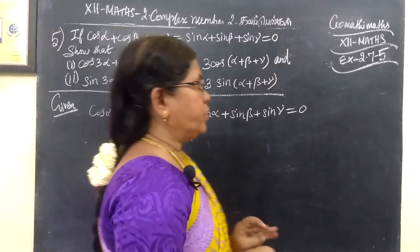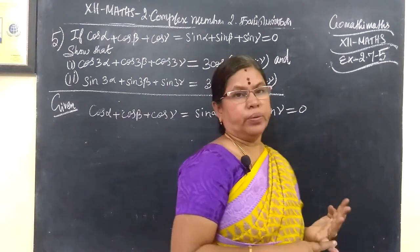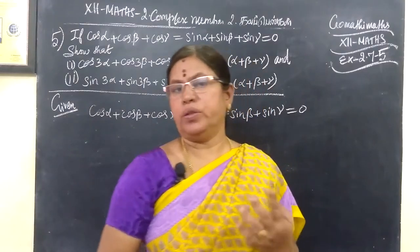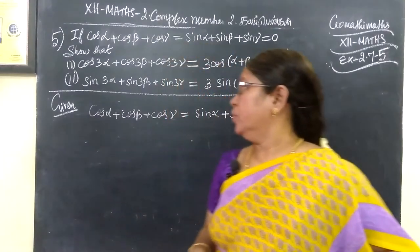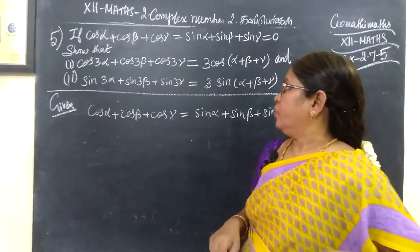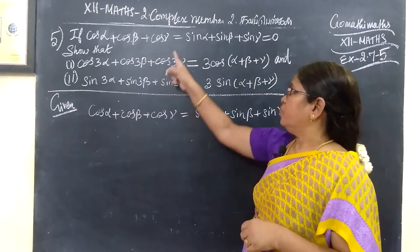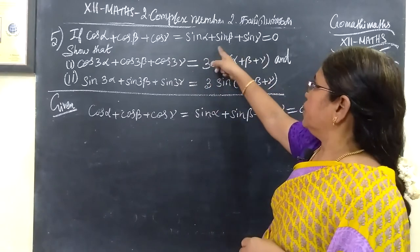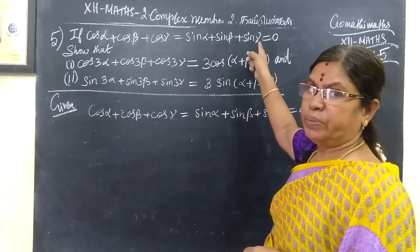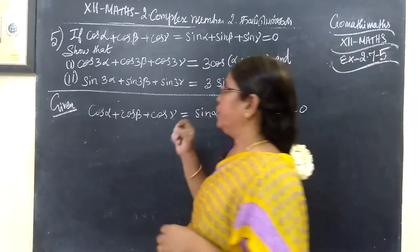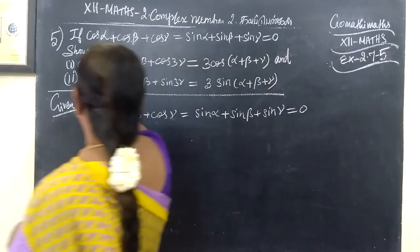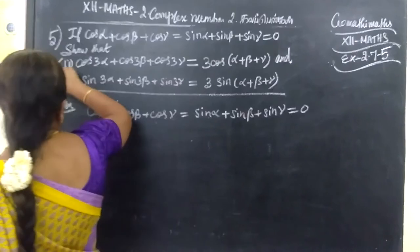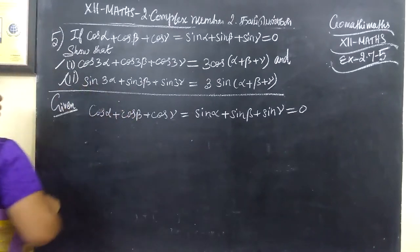Exercise 2.7, question number 5. 12th math. If cos α + cos β + cos γ = 0 and sin α + sin β + sin γ = 0, show that these two results hold.